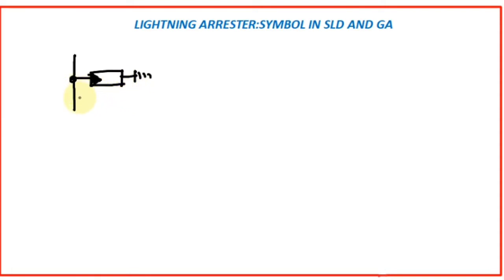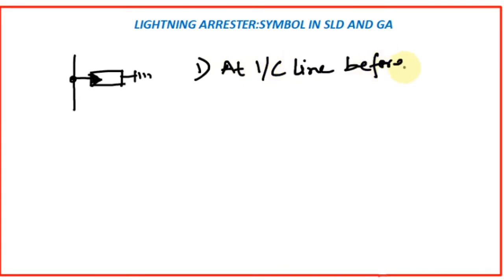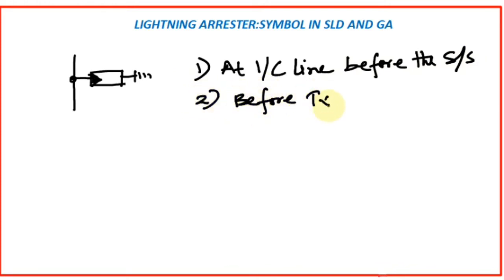It basically arrests any lightning surge or any high-frequency switching surge and does not allow it to enter the substation or the transformer. So the location of lightning arrestor will be: number one, before entering the substation or switchyard, and number two, before the transformer. These are the main locations for lightning arrestor.